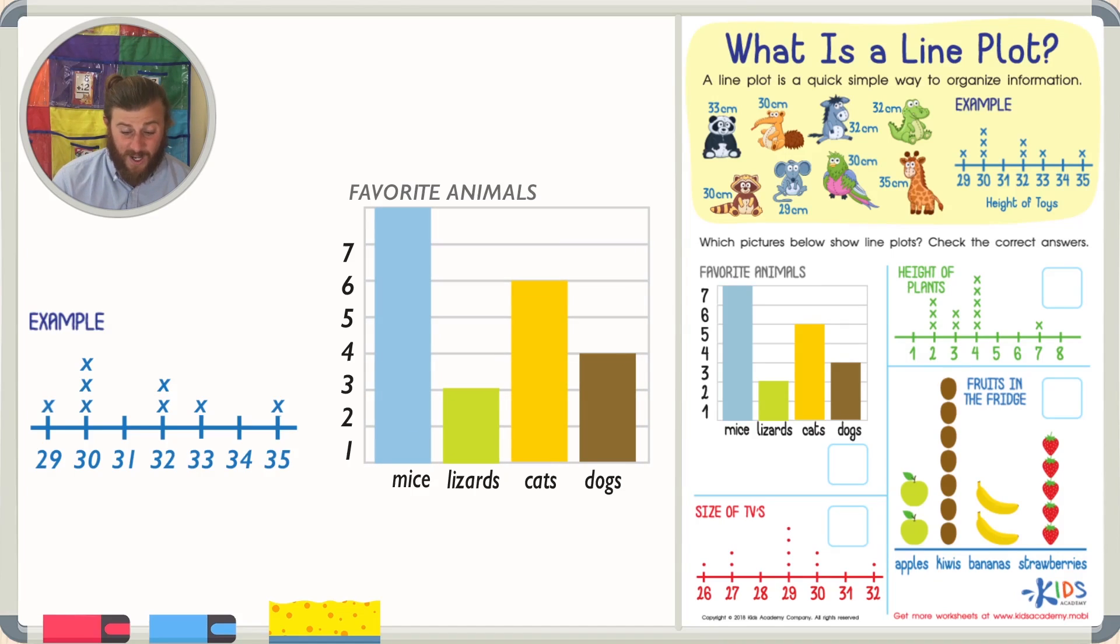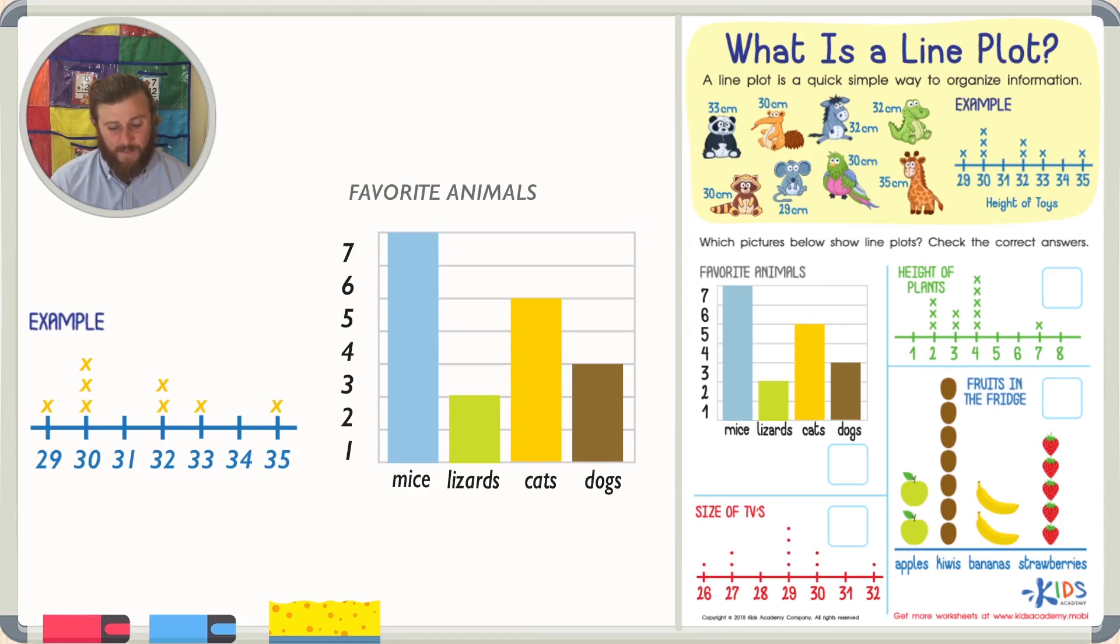Also, this graph has colorful bars and not X's. So these are two reasons that this graph is not a line graph. This graph is actually called a bar graph and it's another great way to organize information, but it is not a line plot.